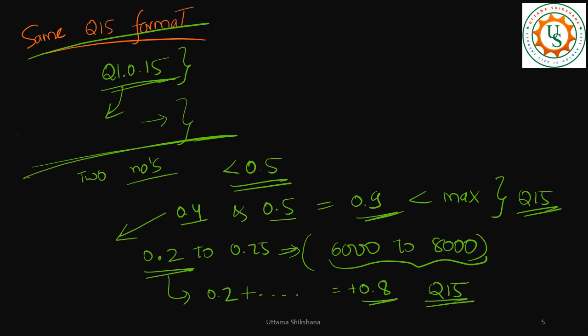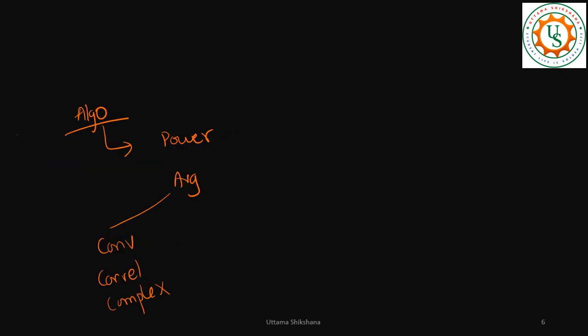That's why I'm telling that in case if it's possible for you to deal with the numbers which are in this range, that would be good so you can still operate in the same Q format.